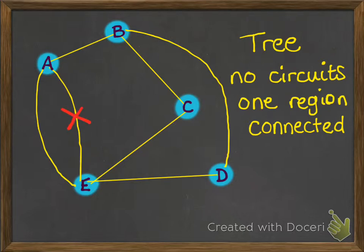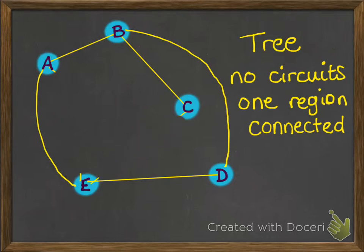I'm going to start off by removing this one. We still don't have a tree because we've still got circuits in there, so I'm going to pick another one to remove. We've still got a circuit there — you can see all around the outside — so we need to remove another edge. I'm going to go with this one. Now we're at the point where we have a tree. We've got no circuits, and we also can't remove any more edges because if we do, it won't remain connected. We now have a tree.